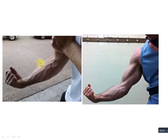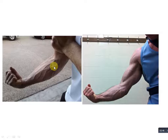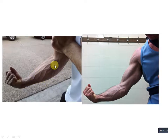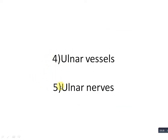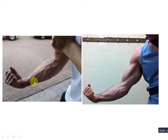Have you ever noticed that boys always show their veins on the ulnar side of the forearm? This is because the ulnar components — the ulnar vein, ulnar artery, and ulnar nerve — are more superficial compared to the radial components. Since these ulnar components are superficial structures, they are also going to pass over the flexor retinaculum. So the fourth structure is the ulnar vessels.